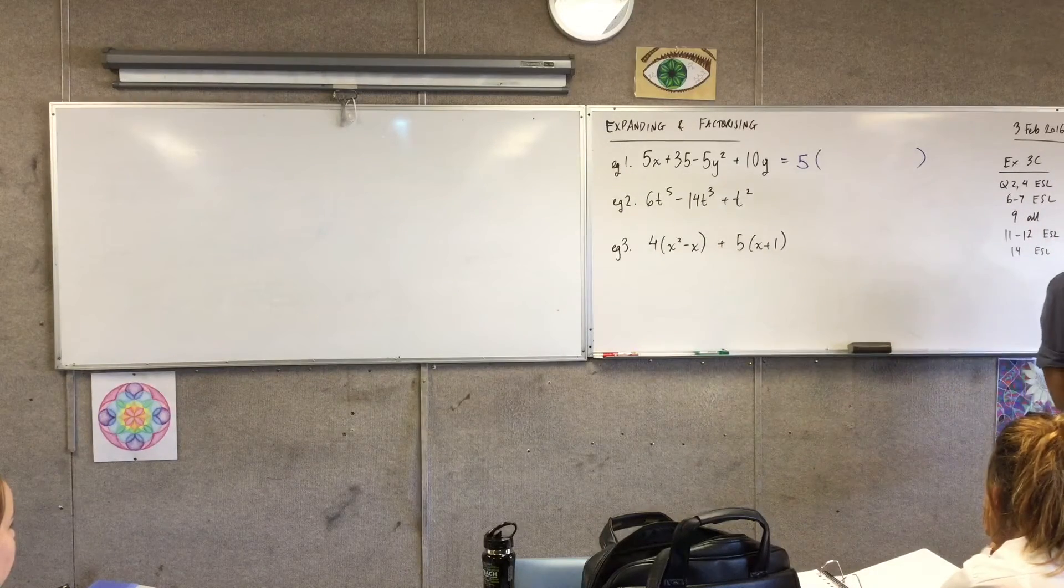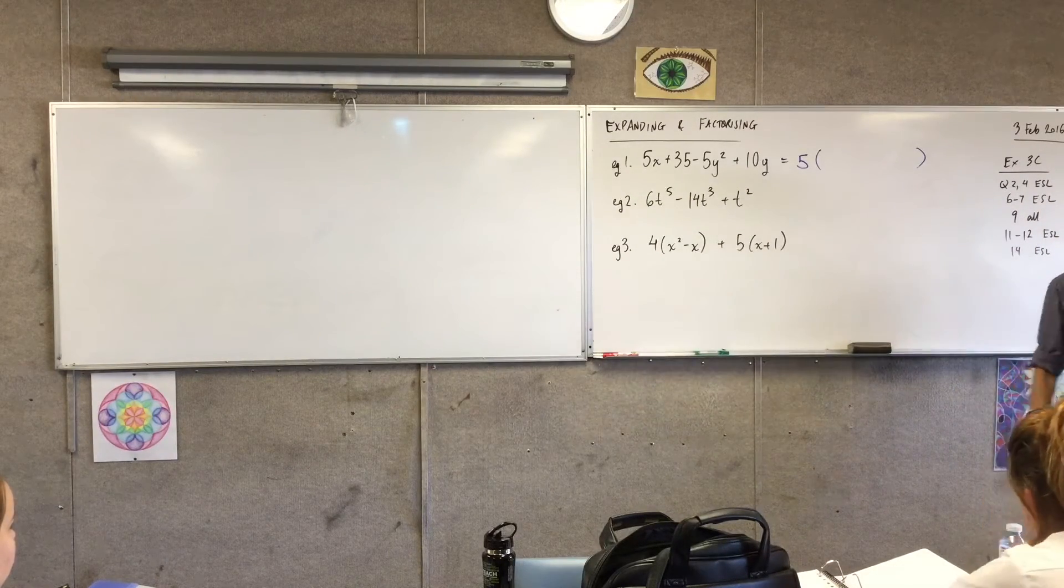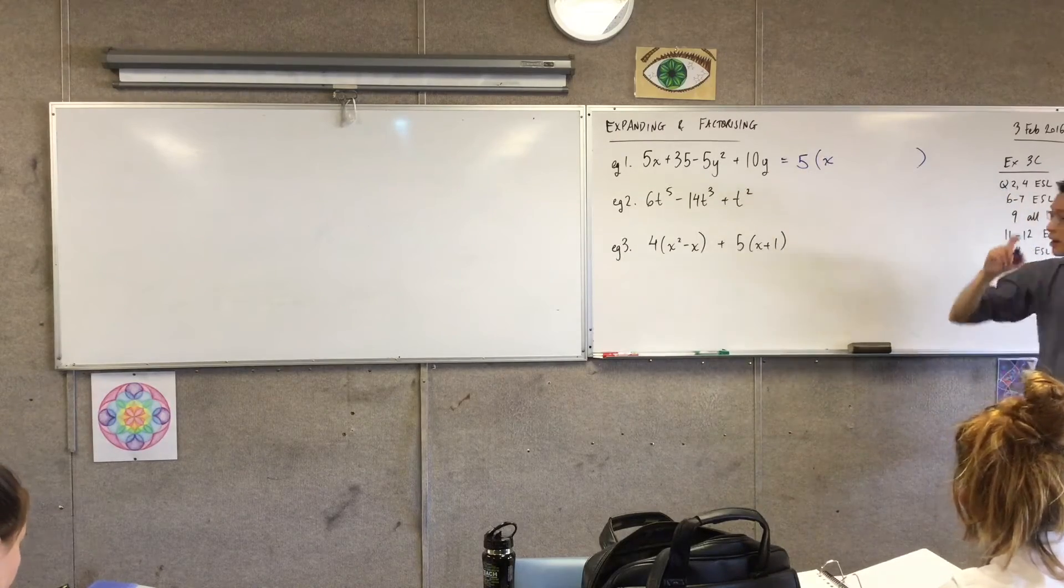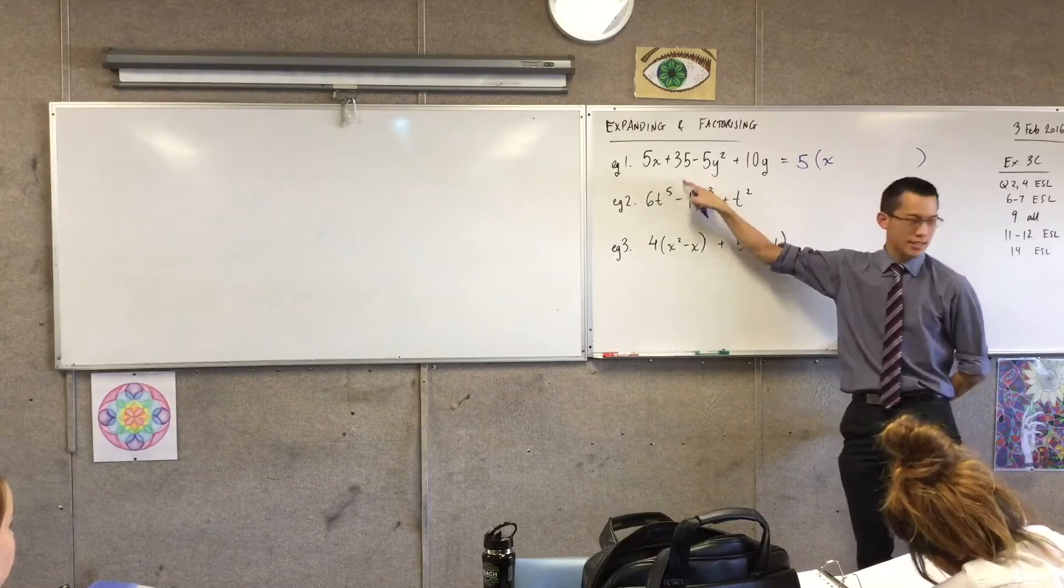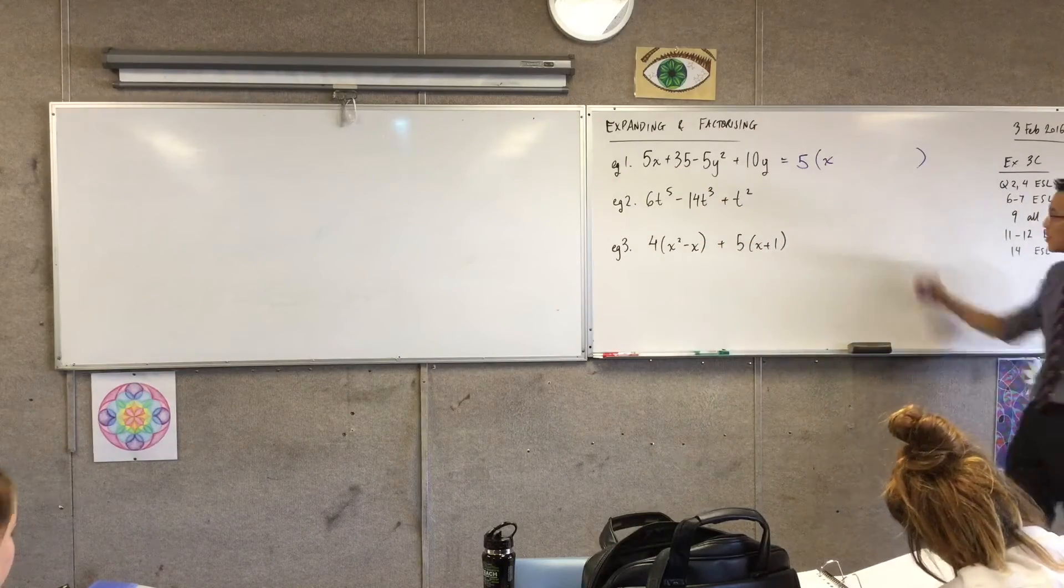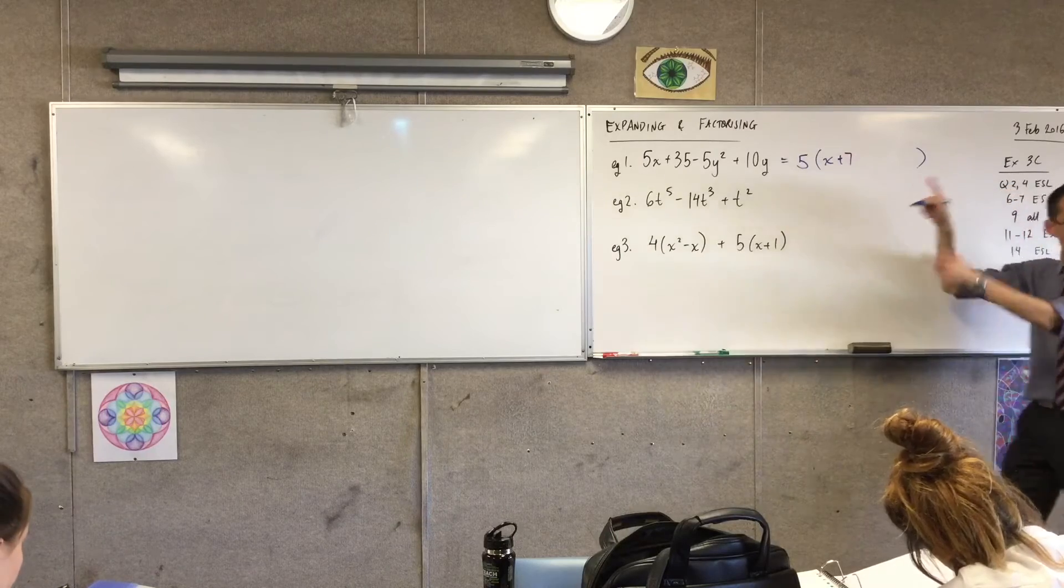When you take the 5 out of the first term, what do you get left with? X. Just the X, right? I'm dividing. 35 - it's not as neat, but if you divide that by 5, you get left with? 7. Right? And I can keep going all the way through.